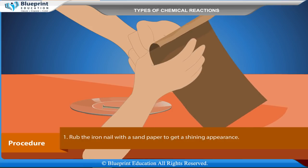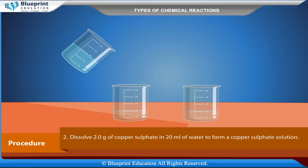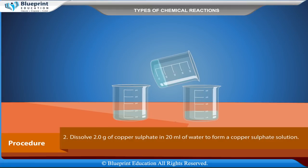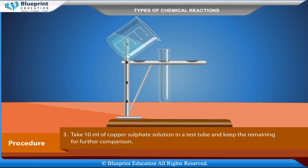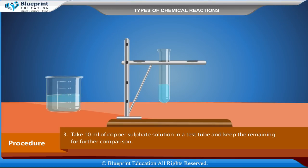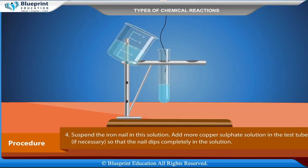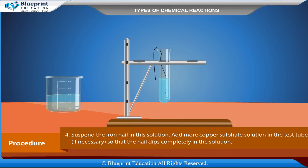Rub the iron nail with sandpaper to get a shining appearance. Dissolve 2g of copper sulphate in 20ml of water to form a copper sulphate solution. Take 10ml of copper sulphate solution in a test tube and keep the remaining for further comparison. Suspend the iron nail in this solution, adding more copper sulphate solution if necessary so that the nail tip is completely submerged.